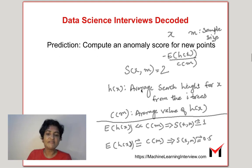So, h of x is nothing but the average search height for x from the various itrees that we have constructed. We have constructed a bunch of isolation trees. We go and search for this point x in each of these trees just like a binary search tree.